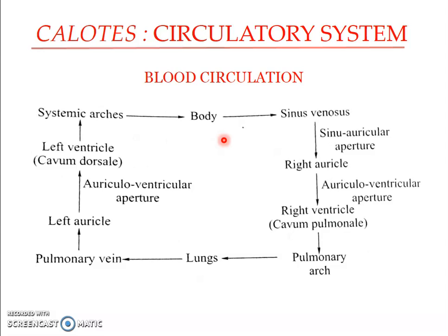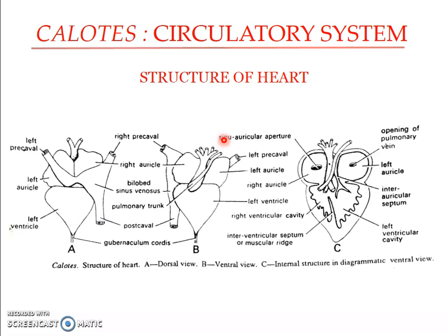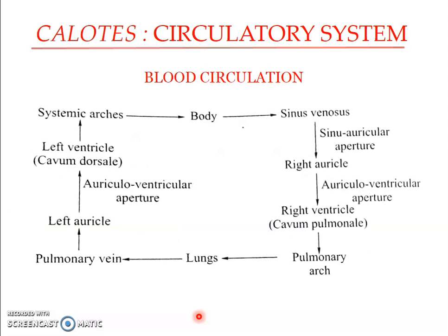To summarize, we saw the external as well as internal structure of the heart and how the blood circulates through the body. In the next presentation, we will look in detail into the arterial as well as the venous system of Calotes. Thank you.